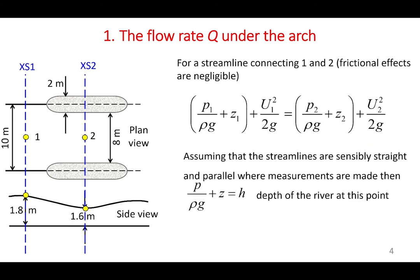If we assume that the streamlines are straight and parallel, then for open channel flow the pressure head plus elevation equals the depth of the river at that point. Therefore, we can simplify the Bernoulli equation: the depth at point 1 plus velocity head at point 1 equals the depth at point 2 plus velocity head at point 2.